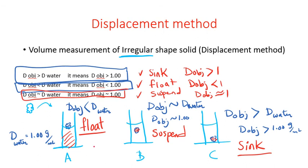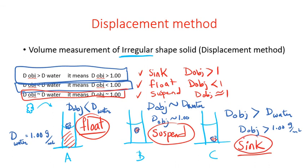So if you have any object and you add it to water, you will see one of these three outcomes: floating, suspension, or sinking. These are three different observations you may expect to see. Now I'm going to ask you: if you add oil to water, what happens?